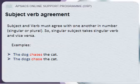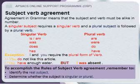Subject and verb must agree with one another in number — singular or plural. A singular subject takes a singular verb, and vice versa, a plural subject takes a plural verb. For example: the dog chases the cat. When the subject becomes plural — the dogs — the verb becomes chase. Agreement in grammar means singular goes with singular and plural goes with plural.